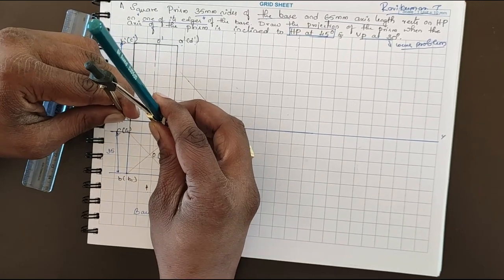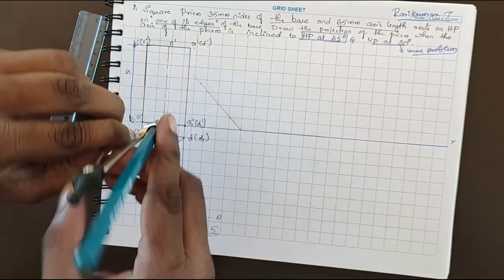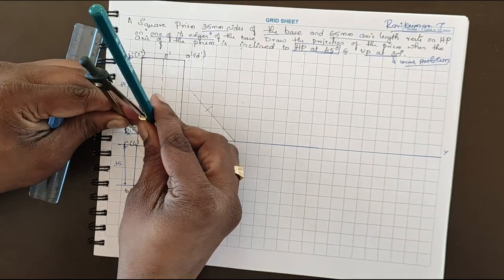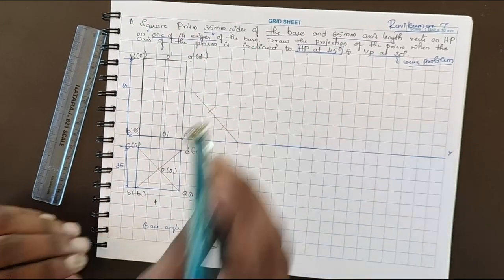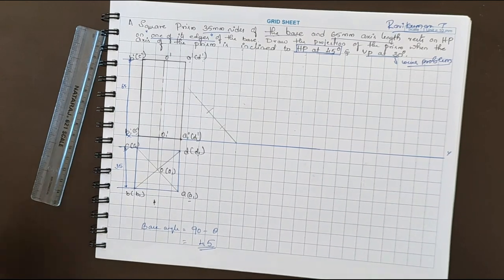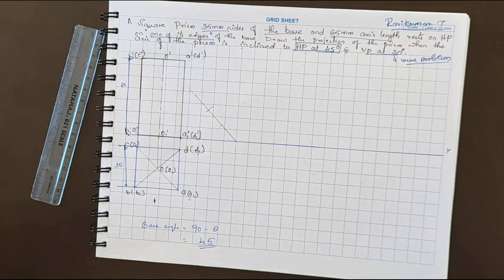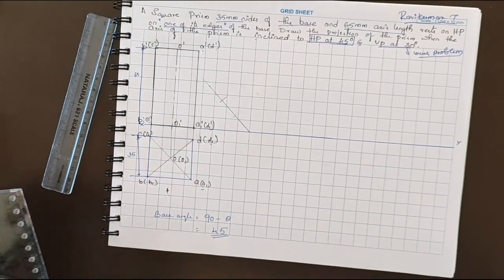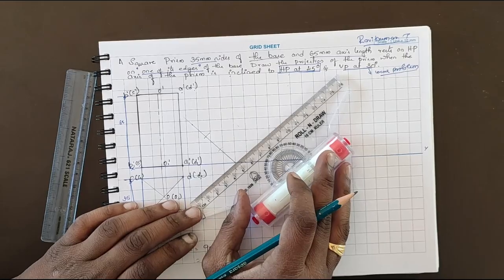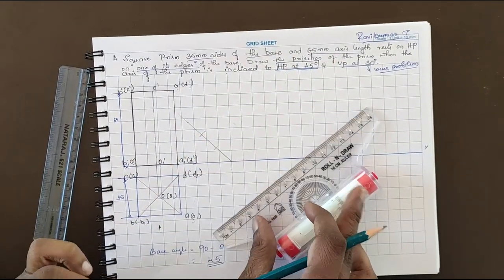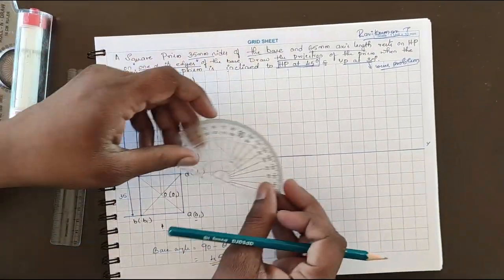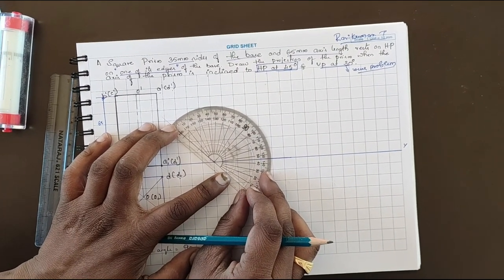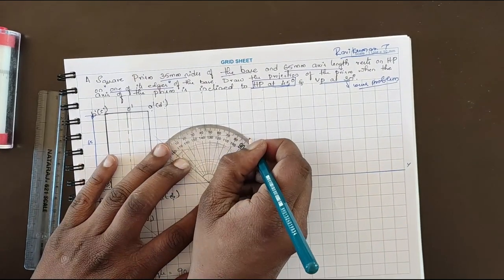From here cut an arc, and similarly from the axis point cut an arc. Use a roller scale to avoid confusion. You need to take 90 degrees — take one line at 90 degrees, then automatically the other two lines follow as well. From one line take 90 degrees and draw the 90-degree line.